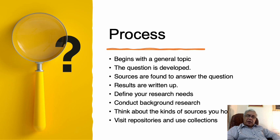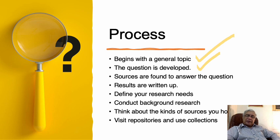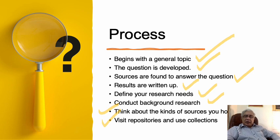Here is the process of how archival research works. The process begins with a general topic — we are required to select a topic. According to that topic, we develop a question. When the question is developed, we try to locate sources in order to find the answer. The fourth step is that when we have found the archival source, we write the results and define why we are doing this research. Background research will also be conducted. We approach repositories and data collections. These are the steps taken to complete the process of archival research.